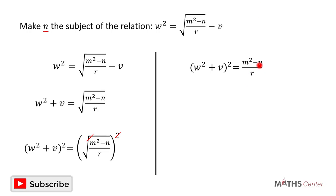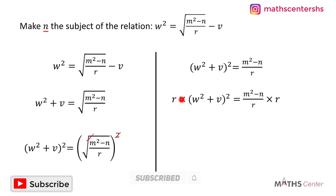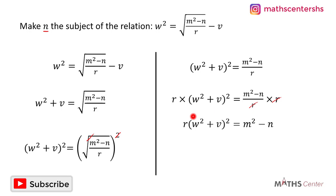I want to make n the subject, so I'll multiply both sides by the denominator r to remove the fraction. Multiplying the left hand side by r and the right hand side by r, the r's cancel, giving us r times w squared plus v, all squared, is equal to m squared minus n.